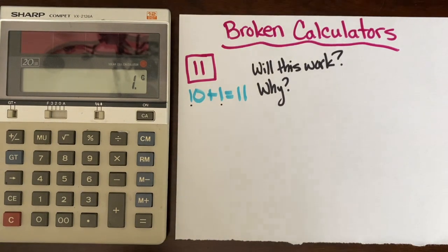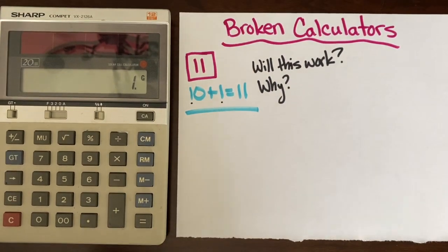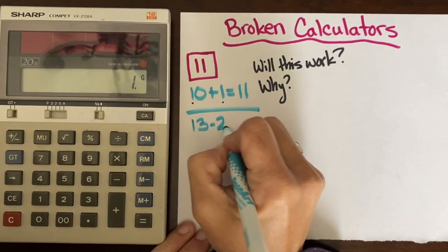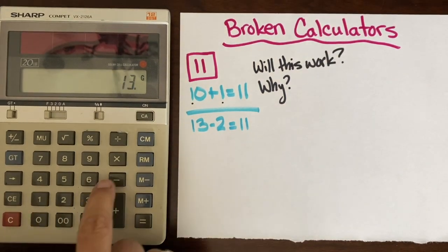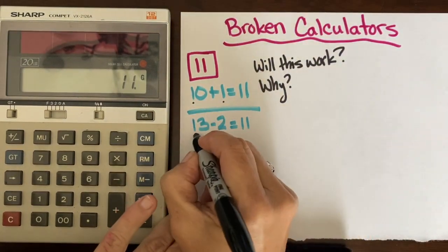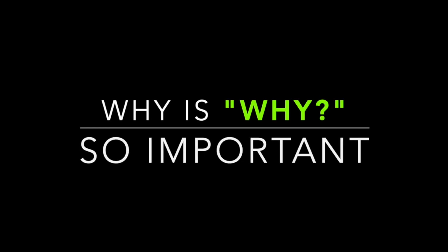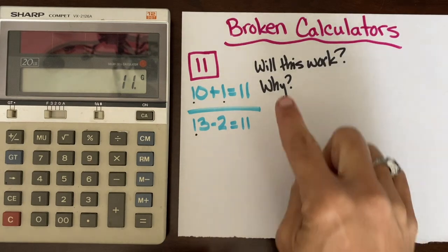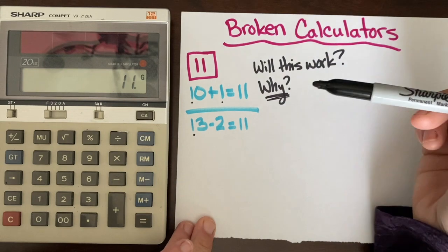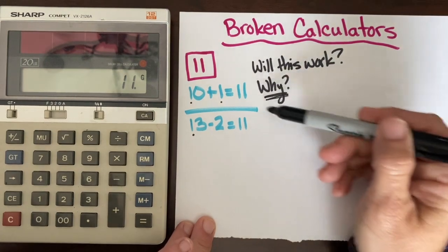We can think about other options. I have the ability to use addition, subtraction, multiplication, and division. Let's see if 13 minus 2 — that does equal 11. But will this work, and why? This will not work, because we did press the one digit. This 'why' is super important — we are asking students to justify their reasoning, which is a skill used in mathematical practice from kindergarten all the way to high school.